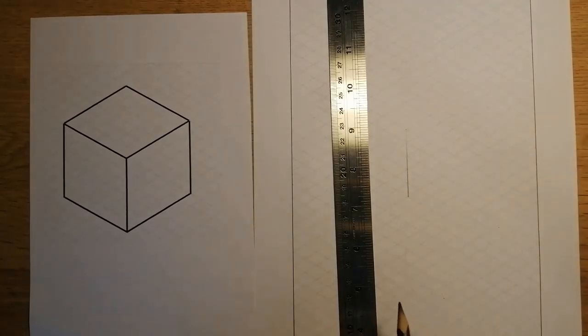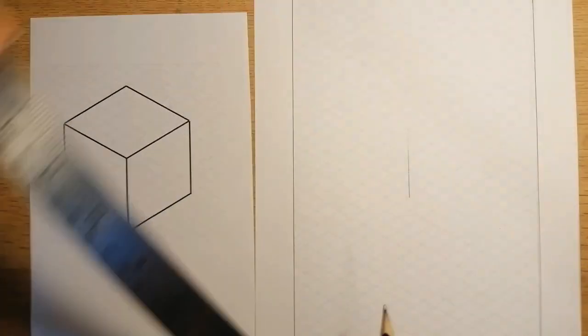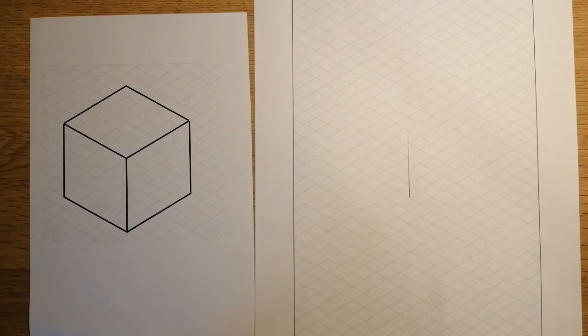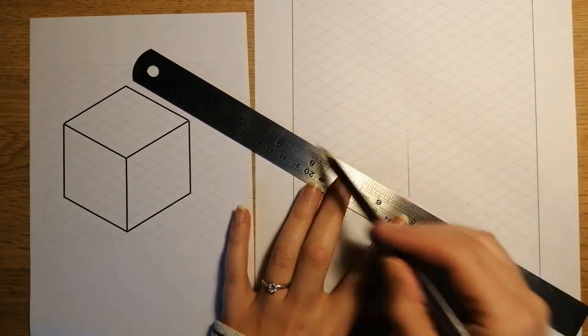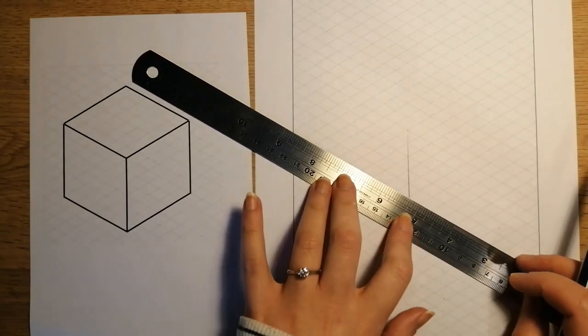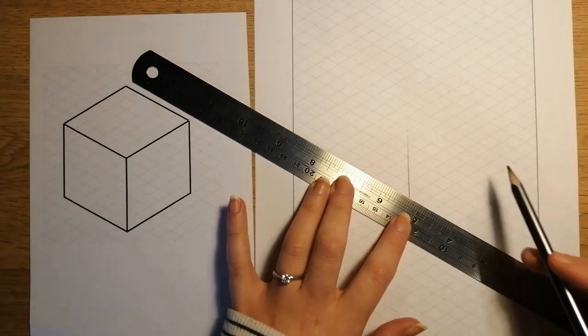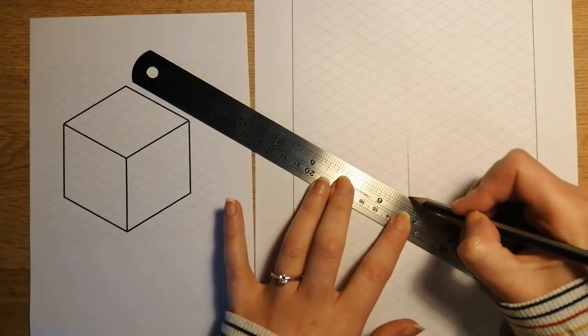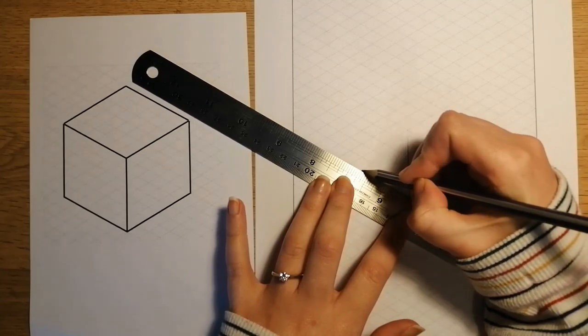Next up, I'm going to draw the bottom sections of my cube. So I'm going to line my ruler up with this line here that is going up to the side, this 30 degree line. And again, because it's a cube and all of the sides will be the same length, I'm going to count five diamond widths. One, two, three, four, five.